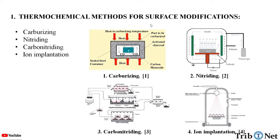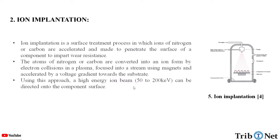Thermochemical methods for surface modifications has four types: carburizing, nitriding, carbonitriding, and ion implantation. In the last videos, we have studied about carburizing, nitriding, and carbonitriding. In this video, let us understand about ion implantation.